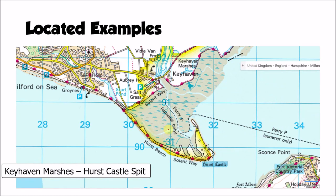The final example is Keyhaven Marshes, located behind Hurst Castle Spit in Hampshire — one of the examples we looked at when learning about spits, with the Isle of Wight visible nearby. The area is nicely sheltered by the spit, and river sediment collects naturally behind it, so that mud flat has become an extensive salt marsh system. You can again see those creeks and channels between areas of the marsh.